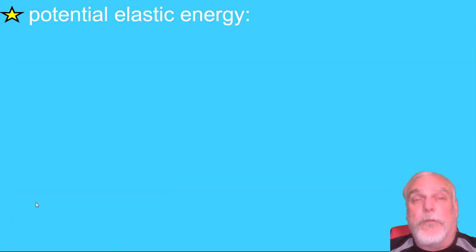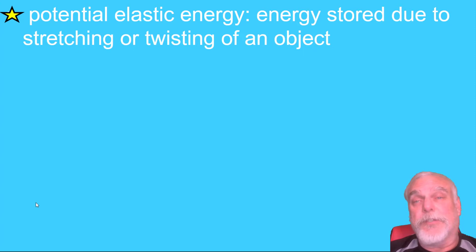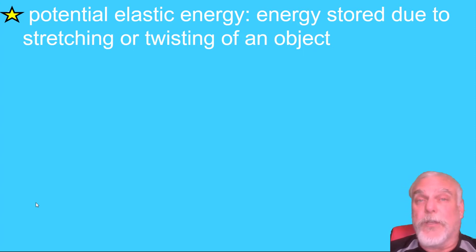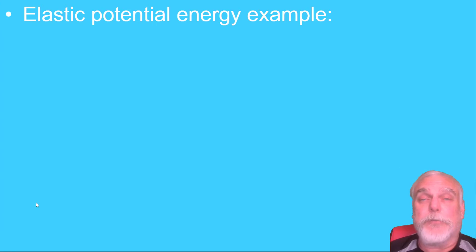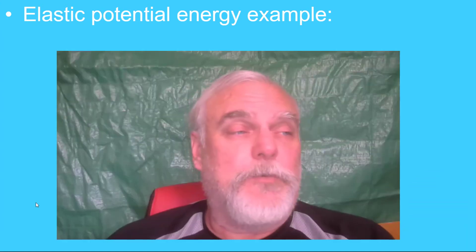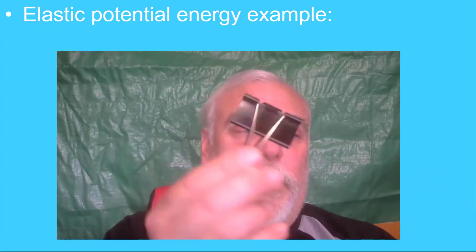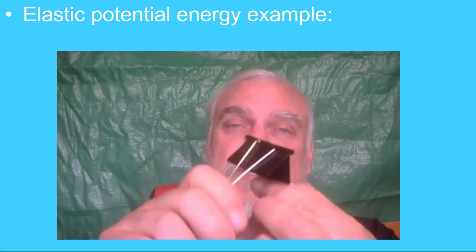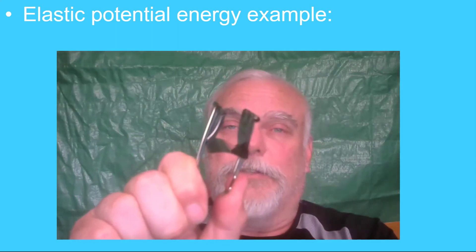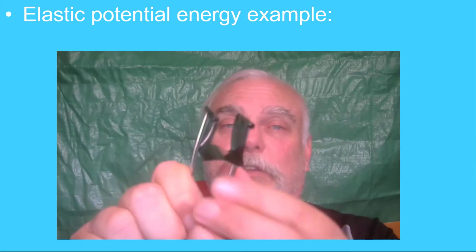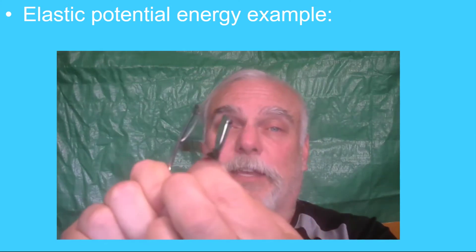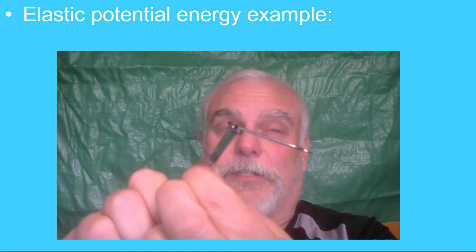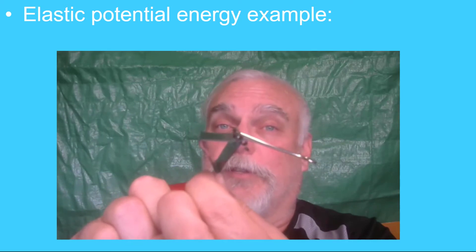Another example of potential energy is elastic energy, defined as the energy stored due to the stretching or twisting of an object. For example, a binder clip — when you squeeze it, it now has the potential to do something. It's not doing it yet, but if you release one end, it snaps and creates a loud noise.